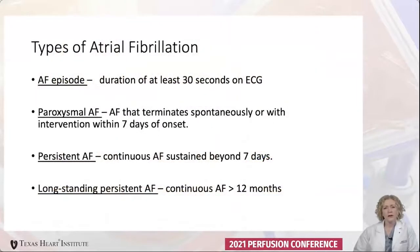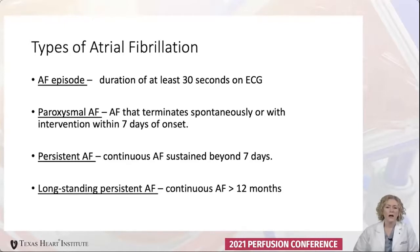There are several different types of AFib. An AFib episode is considered at least 30 seconds of AFib on an EKG tracing. Paroxysmal AFib is AFib that resolves within seven days of its onset. It's considered persistent if it continues beyond seven days, and long-standing persistent AFib if it's continuous AFib for greater than 12 months.